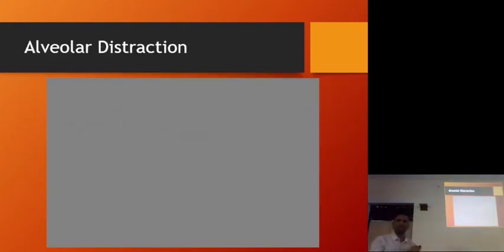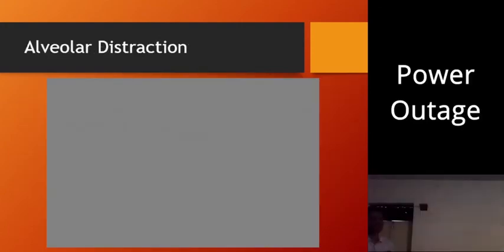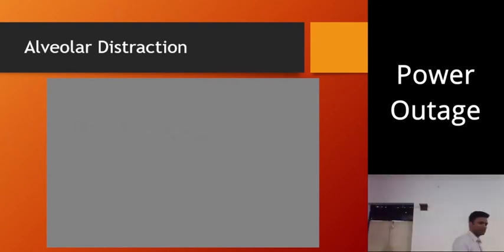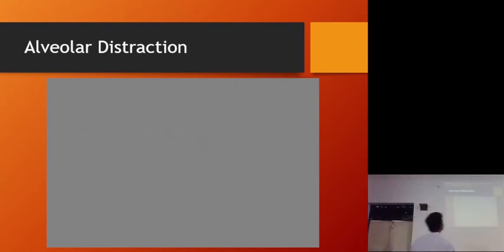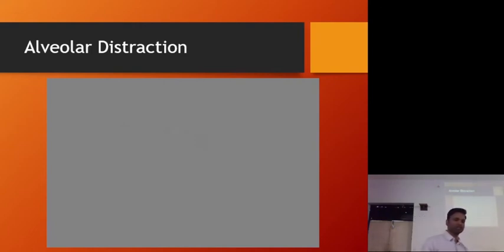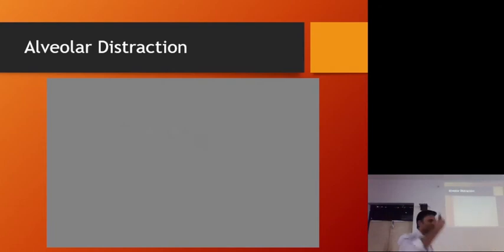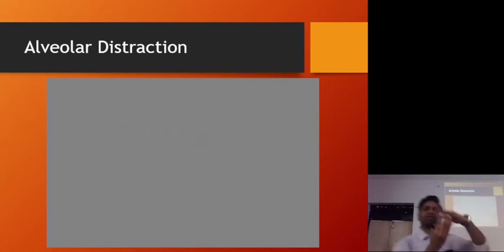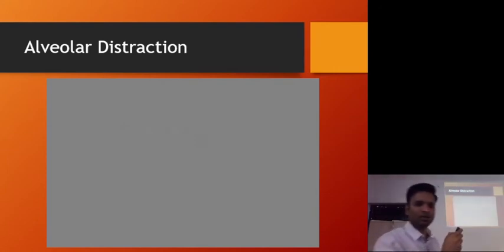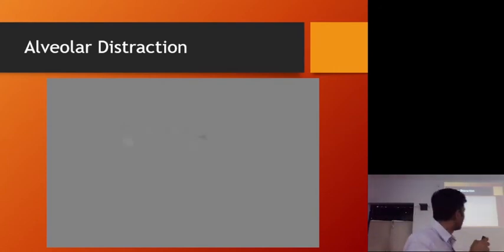Then we have alveolar distraction, which is more used in implant dentistry. It is used to achieve height of the alveolar bone. If we want to increase the height of the alveolar bone, we go for alveolar distraction.